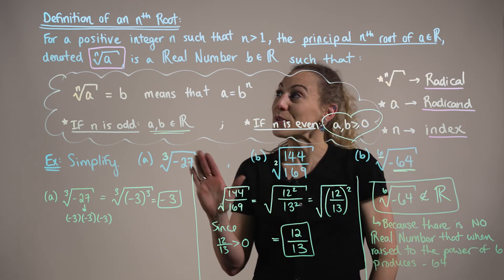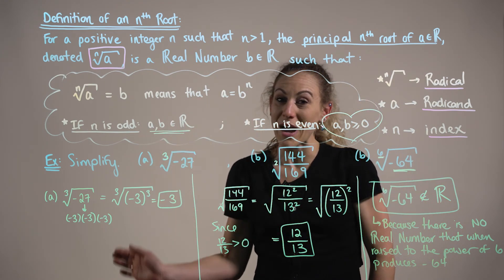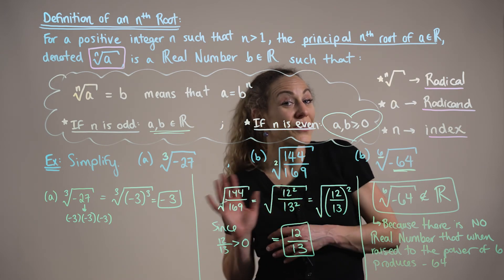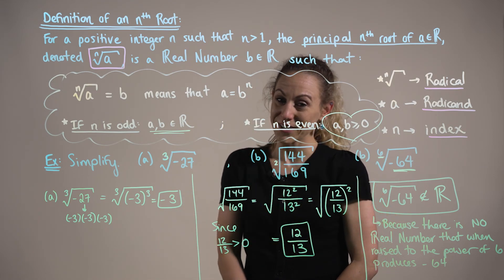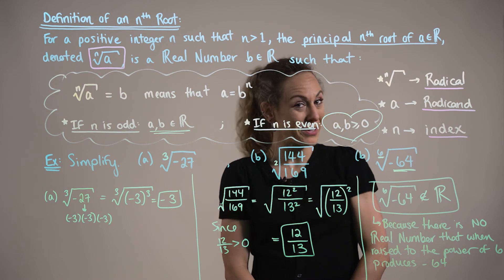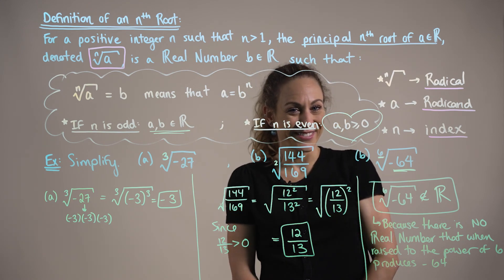So, now that we have reviewed the definition of the nth root radical, we're officially ready to start transitioning to the properties of radicals and their similarities to the properties of exponents.